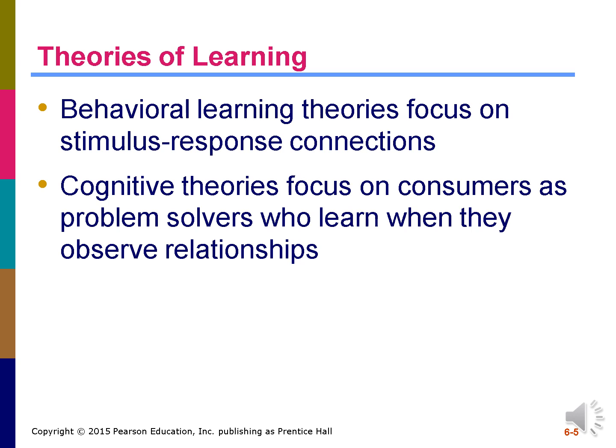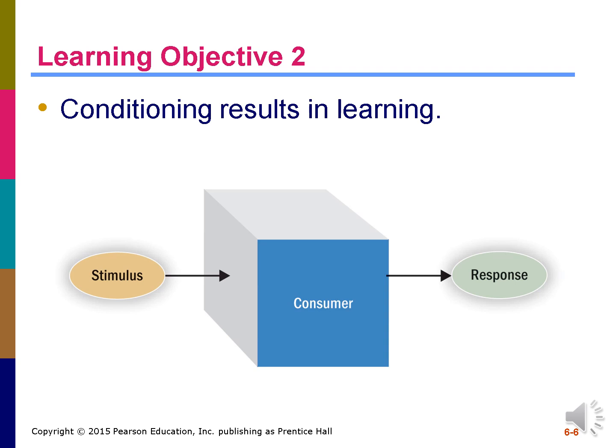Behavioral learning theories focus on stimulus-response connections and assume that learning takes place as the result of responses to external events. Psychologists who subscribe to this viewpoint do not focus on internal thought processes. Instead, they approach the mind as a black box and emphasize the observable aspects of behavior. The observable aspects consist of things that go into the box — the stimuli or events perceived from the outside world — and things that come out of the box, the responses or reactions to these stimuli.